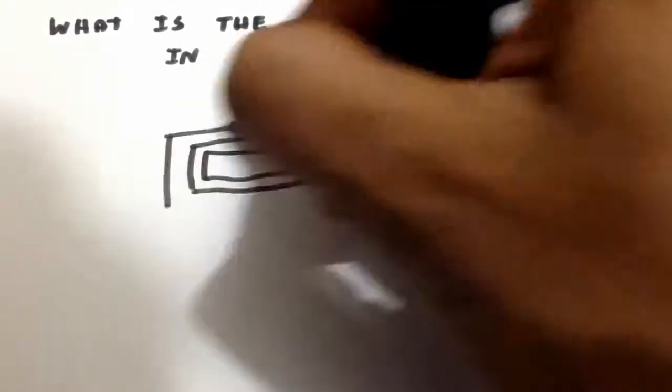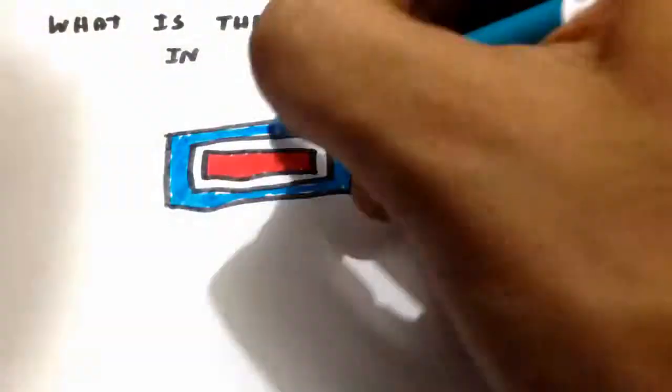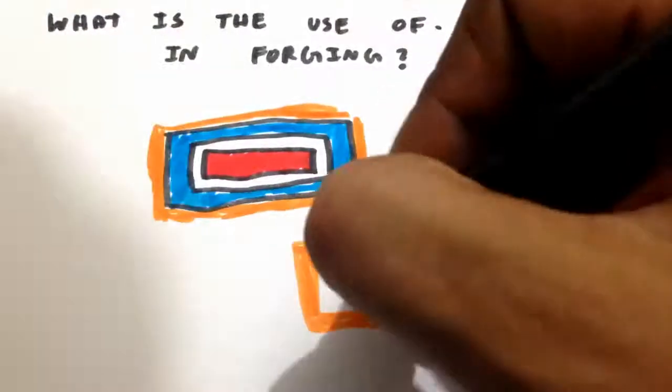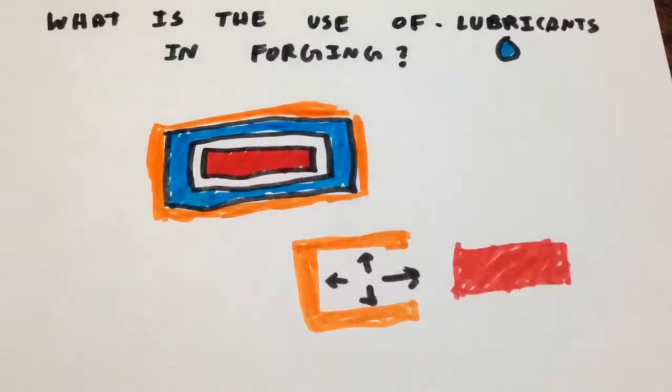It's time to answer our last episode's question: what is the use of lubricants in forging? The lubricant is used as a thermal barrier to restrict heat transfer from the workpiece to the die. It also acts as a parting compound to prevent the part from sticking to the workpiece.